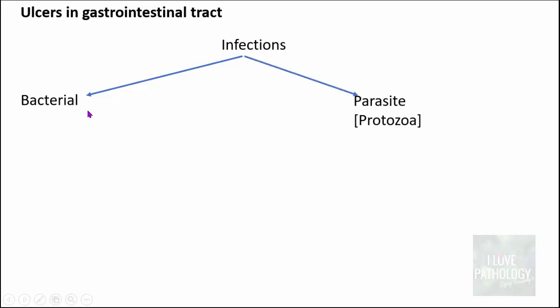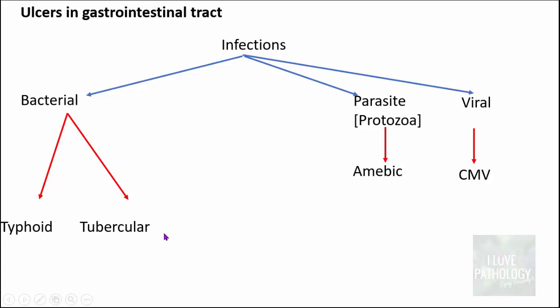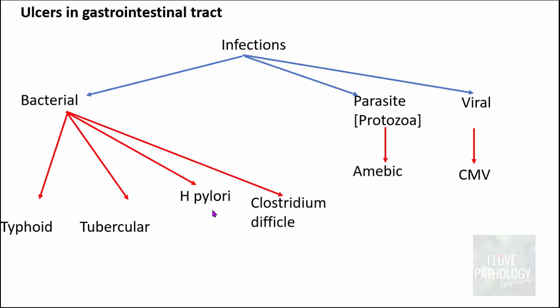Infections can be bacterial, parasitic, or viral, all of which can lead to ulcers in the gastrointestinal tract. The most common viral infection implicated in ulcers is cytomegalovirus. The most common parasitic example is amoebic ulcers caused by Entamoeba histolytica. Bacterial ulcers can be because of typhoid, tuberculosis, H. pylori — which we have discussed in great detail — and also Clostridium difficile. In today's session, let us see the differences between typhoid and tubercular ulcers.